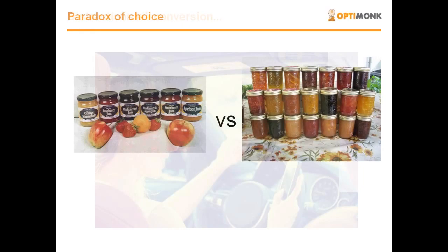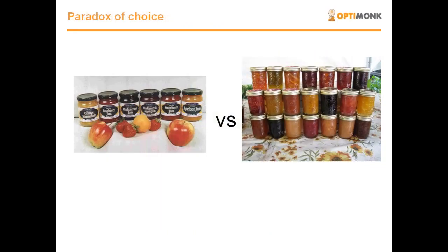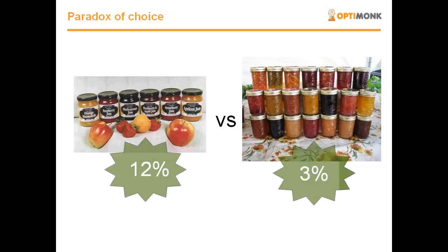There's a well-known study that was conducted in France in the 2000s. In a supermarket, they set up a jam tasting booth to offer different flavors of jams to their customers. They compared showing only six different kinds of jams with showing 24 different kinds of jams. When they promoted only six different flavors, 12% of the visitors actually purchased jam. But when they increased the number of choices to 24, the conversion dropped to only 3%.